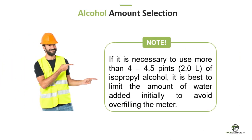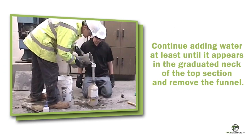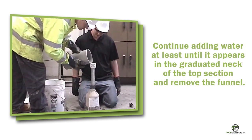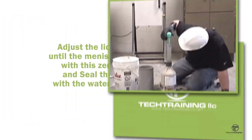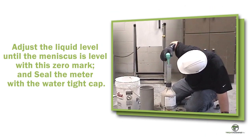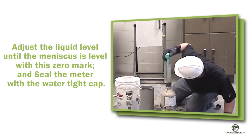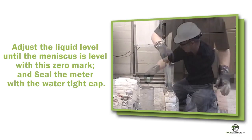When it is necessary to use more than 4.5 pints or 2.0 liters of isopropyl alcohol, it may be necessary to restrict the amount of water added initially to avoid overfilling the meter. However, it is desirable to add at least some water initially to aid in mixing the alcohol and limit contact of concentrated alcohol with the top surface of the concrete. Continue adding water until it appears in the graduated neck of the top section, then remove the funnel. Adjust the liquid level until the bottom of the meniscus is level with the zero mark on the graduated neck — a rubber syringe is useful for this purpose.